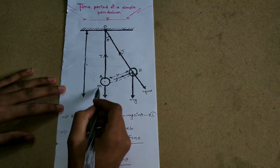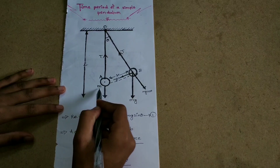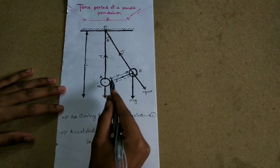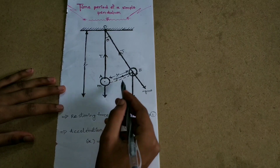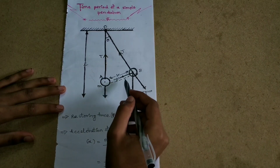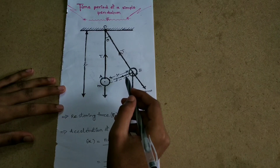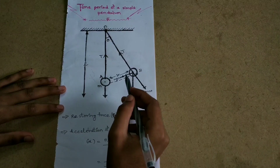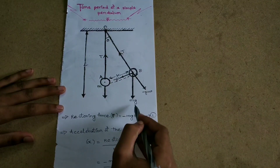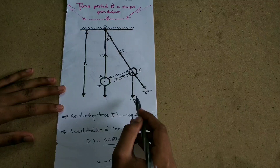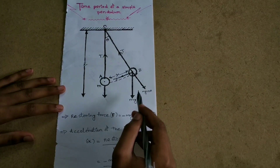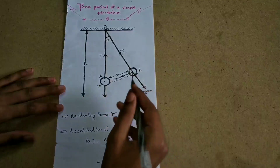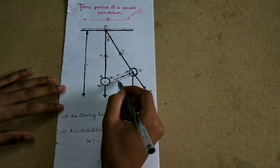Let M be the mass of the bob. When the bob is at A, its weight mg acts in the vertically downward direction. It can be resolved into two perpendicular components: mg cos theta and mg sin theta.